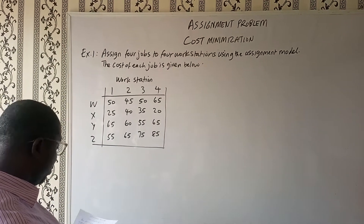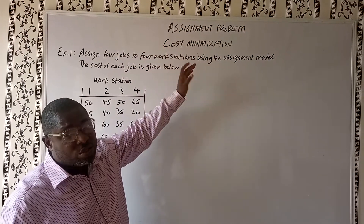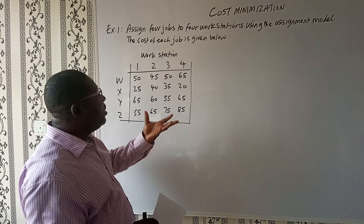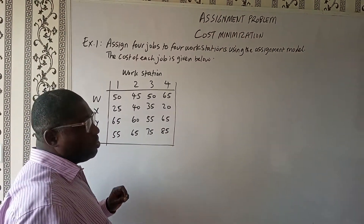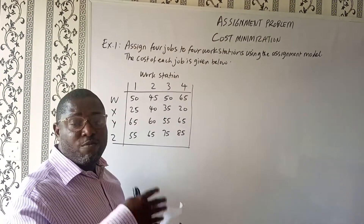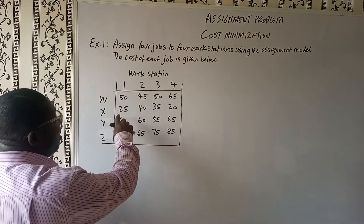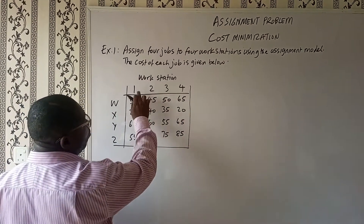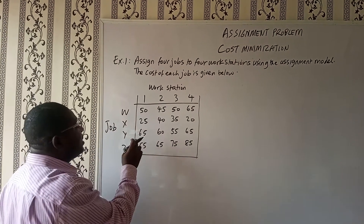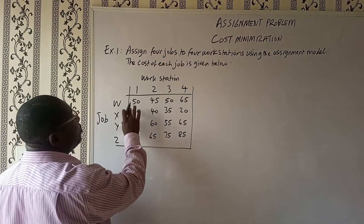Here we have a simple example of the assignment problem — this is cost minimization. We are dealing with reduction of costs. The objective of any business enterprise is to reduce costs in order to have more profits. In this example, we have workstations 1, 2, 3, and 4, and we also have four jobs assigned as W, X, Y, and Z. The task is to determine how to assign each job to a workstation.